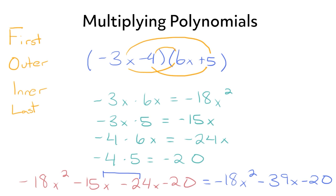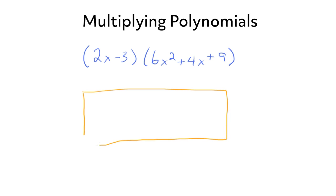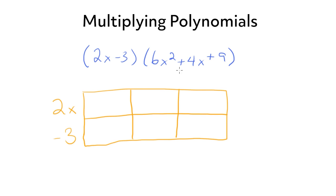Now that we've taken a look at how to multiply binomials by one another, we're going to look at an example of multiplying a binomial by a trinomial using the box method. So let's multiply 2x minus 3 by 6x squared plus 4x plus 9. Since we're working with a binomial and a trinomial, we need to set up a 3 by 2 box. We'll put 2x minus 3 on the side and 6x squared plus 4x plus 9 on top.